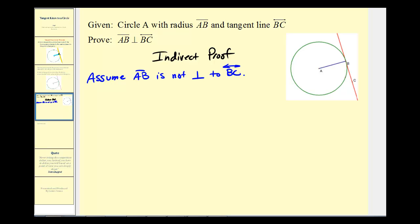If these aren't perpendicular, then there must exist some other point. Let's call it point D, such that segment AD, or radius AD, would be perpendicular to line BC.